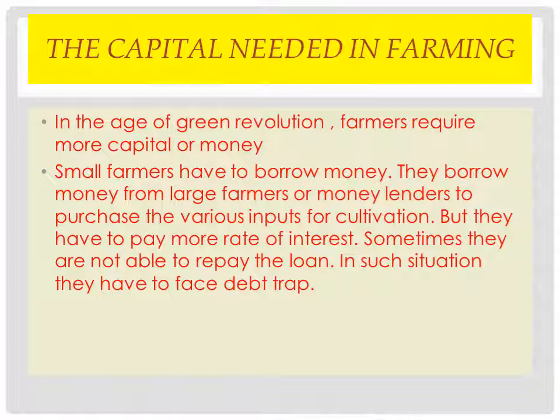Small farmers have a shortage of money, so they have to borrow money from large farmers or moneylenders to purchase the different inputs for cultivation. When they borrow money from moneylenders or big farmers, they have to pay a higher rate of interest, and sometimes they are not able to repay the loan.